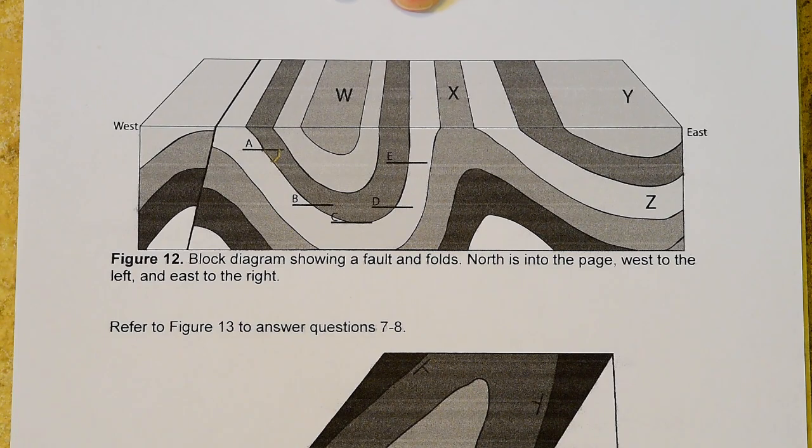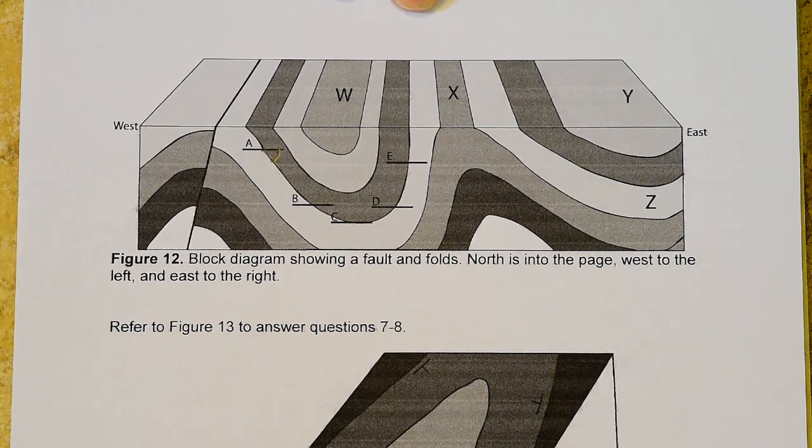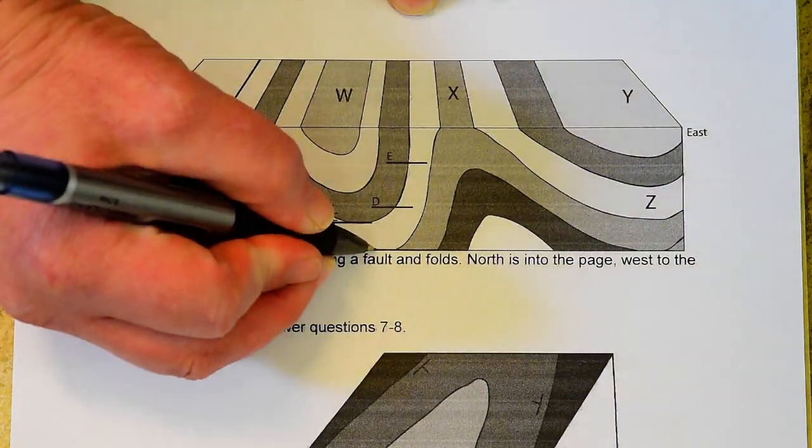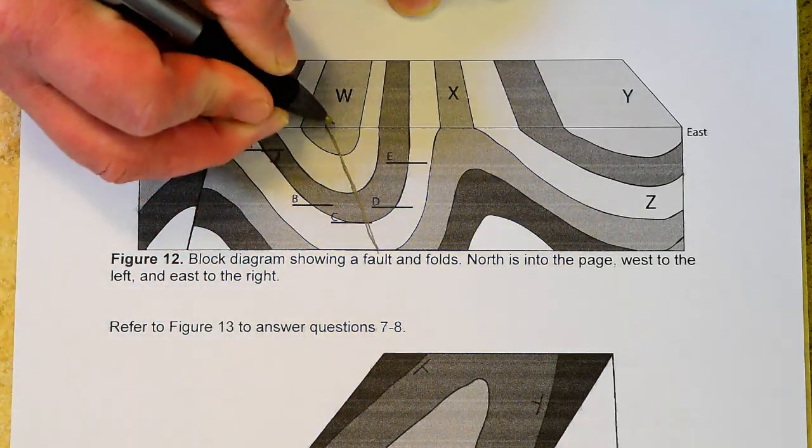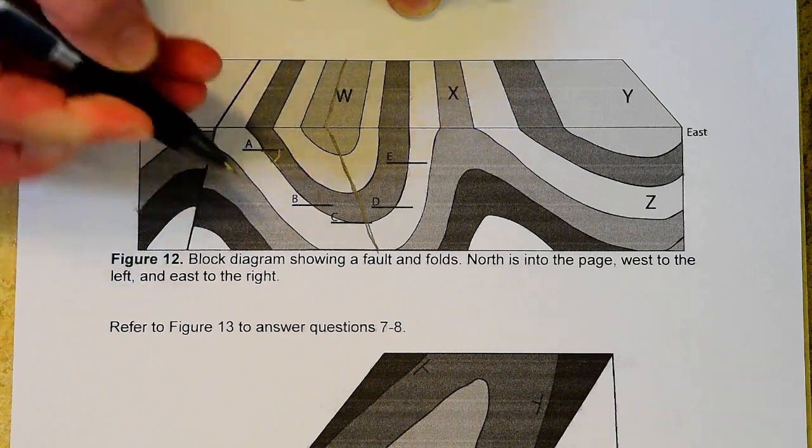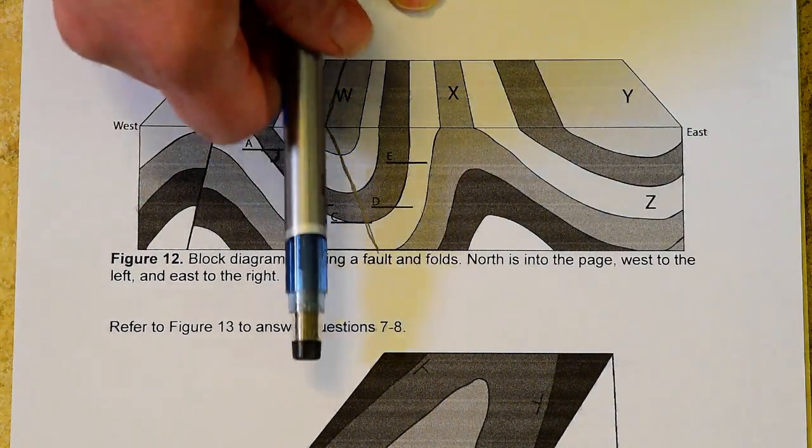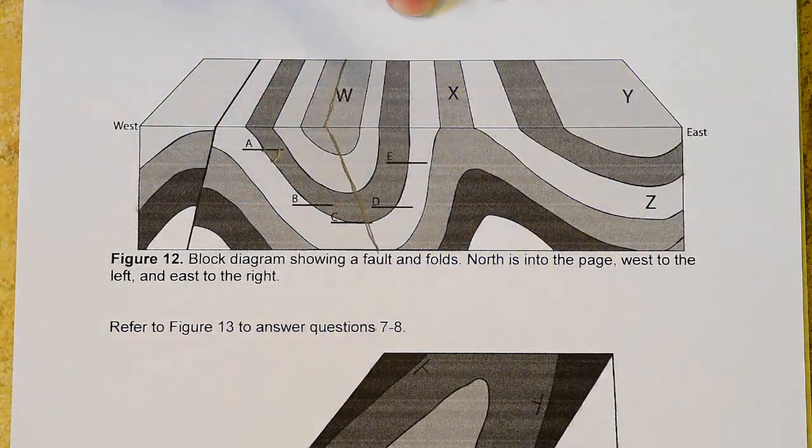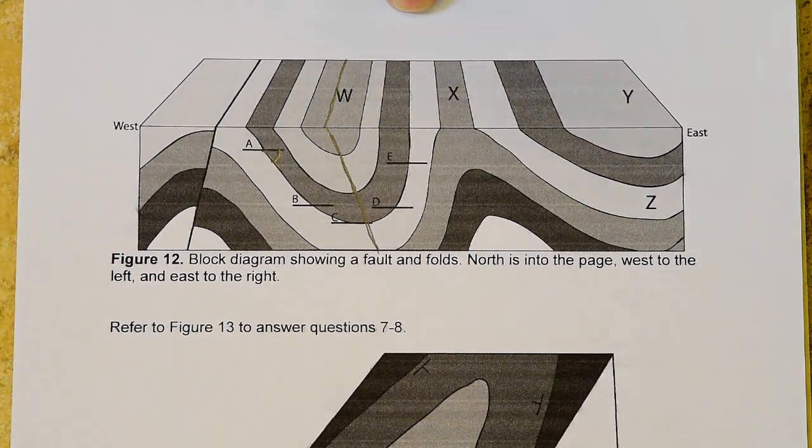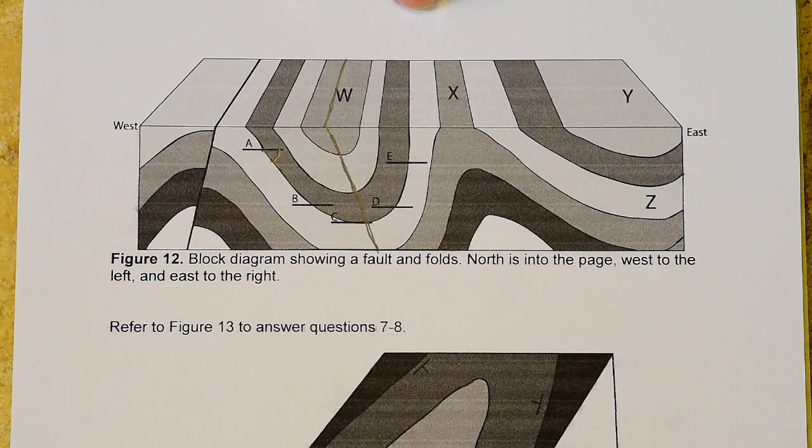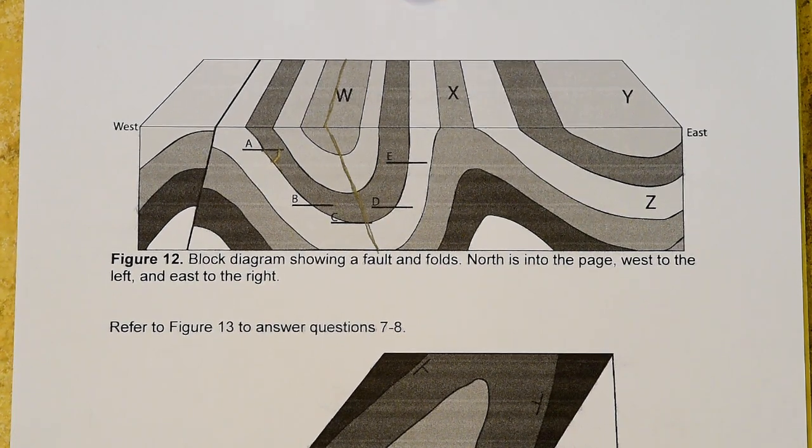And what tells you whether it's upright, inclined, overturned, or recumbent is the axis of that fold, right? You want to look at this axis, whether it is straight up and down, tilted, whether some of the rocks are upside down, whether the fold's on its side. But look at those pictures that are provided, and that will help you figure out the answer to that.